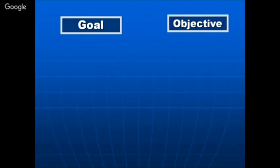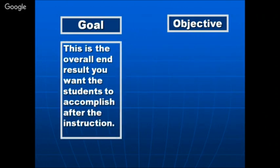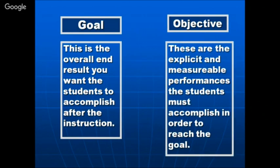Let me give you the difference between goal and objective, as many people have confusion about these two terms. A goal is the overall end result you want the students to accomplish after instruction. An objective consists of explicit and measurable performances the student must accomplish in order to reach that goal — you specify the measurable performance that results in achieving the end result.